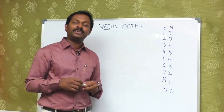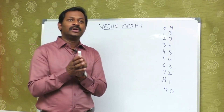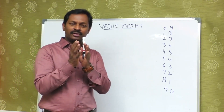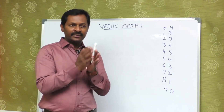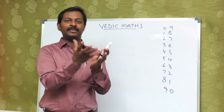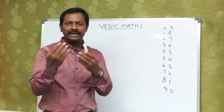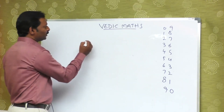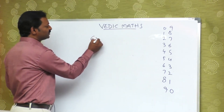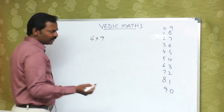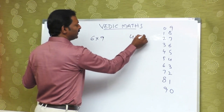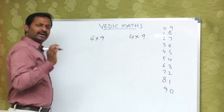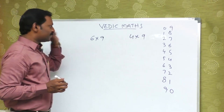We do it in the Vedic method — 10 minus 1. There is one concept. We don't know how to multiply with our number. We don't have to multiply with simple multiplication.